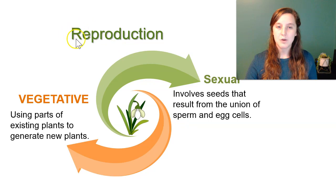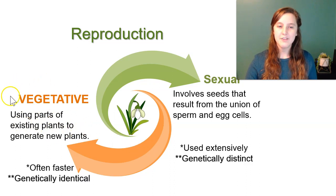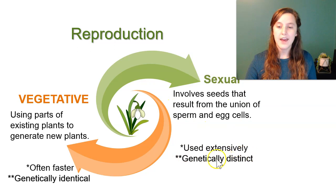Reproduction. We're going to cover two main parts of reproduction today: sexual, which involves seeds that result from the union of sperm and egg cells, and vegetative, which is using parts of existing plants to generate new plants. Vegetative propagation is usually faster but the new plants you're producing are genetically identical to the parent plant. Sexual reproduction is used extensively and the new plants you're creating are genetically distinct.